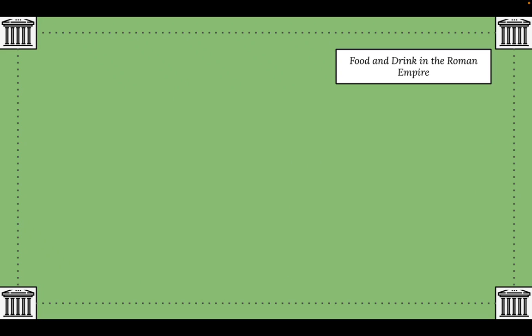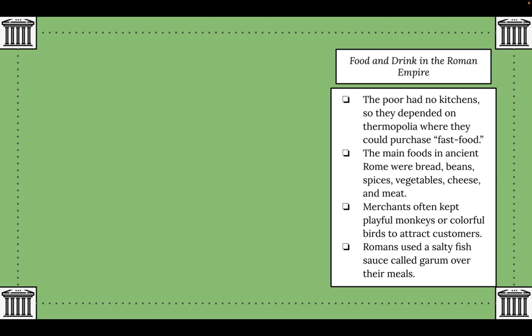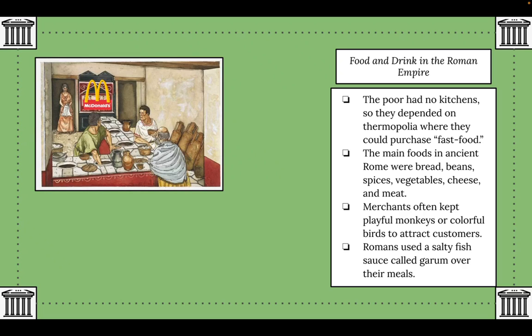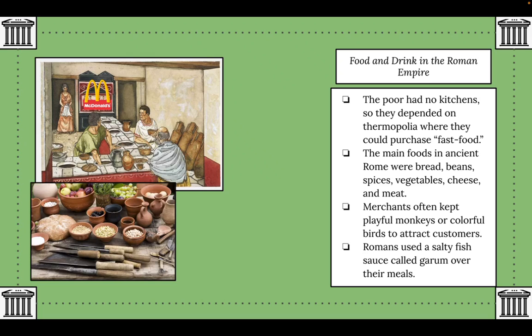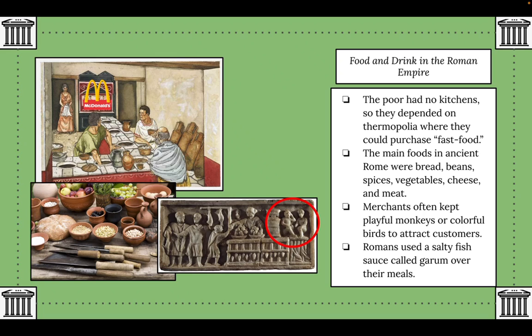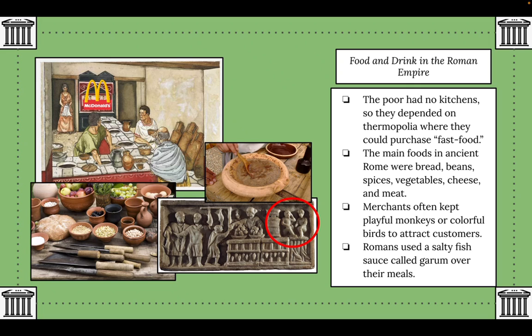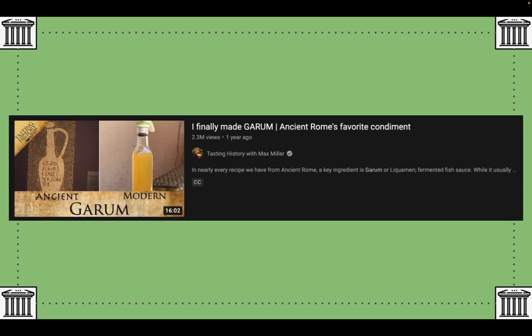Regarding food and drink, the poor had no kitchens so they depended on thermopolia — essentially the fast food of the Roman Empire — where they could purchase warm and cold meals quickly and conveniently. The main foods in ancient Rome were bread, beans, spices, vegetables, cheese, and meat. Merchants often kept playful monkeys or colorful birds to attract customers. Romans used a salty fish sauce called garum over their meals, which is still used in a refined form today.